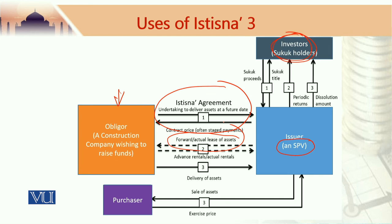At the end of the financing period, when the property has been developed or whatever was to be constructed has taken place, that asset is either sold to a third-party purchaser, or the obligor buys or retains it and pays the price of that asset to the SPV, which then pays back the investments of the Sukuk holders. This is how this Istisna-based Sukuk actually takes place, and these are the simple details of a Sukuk structure based on Istisna.